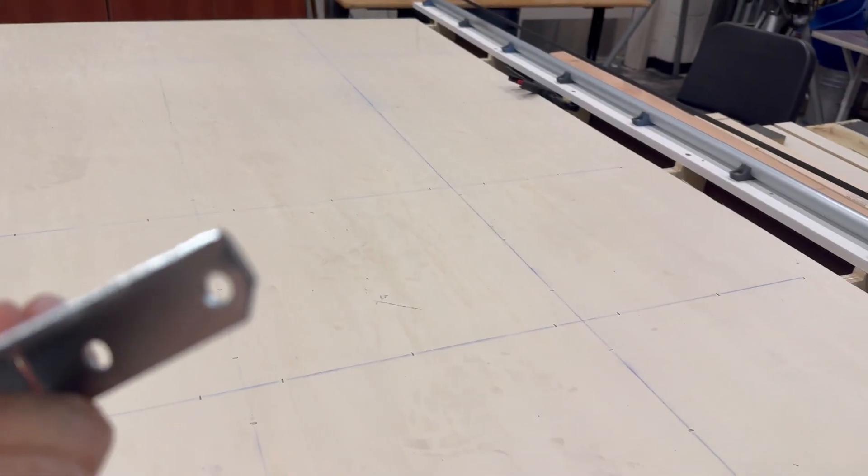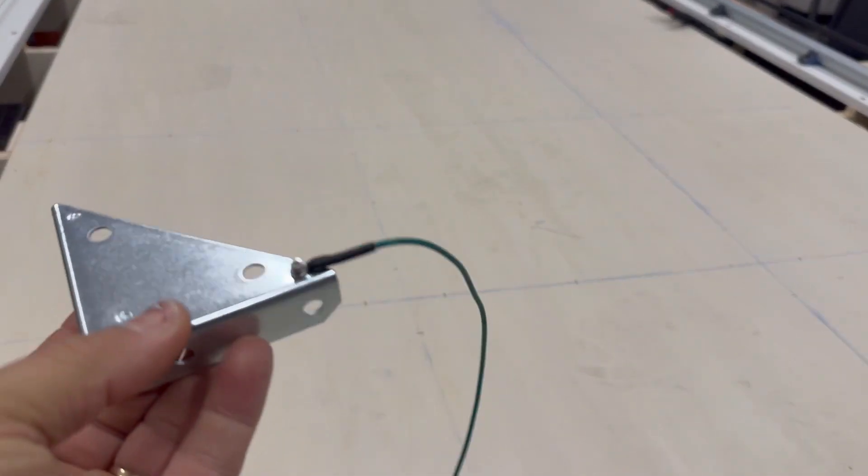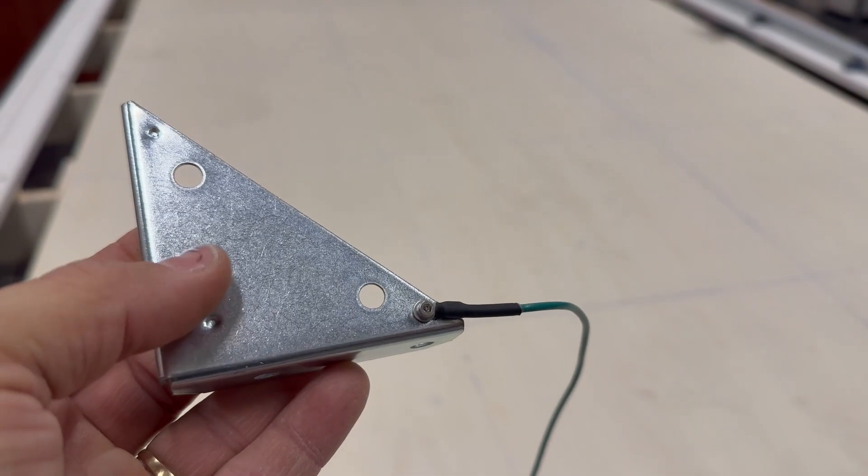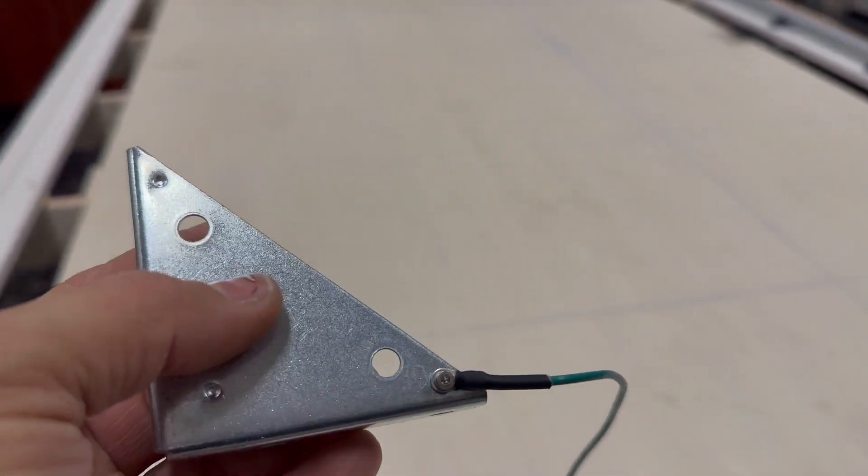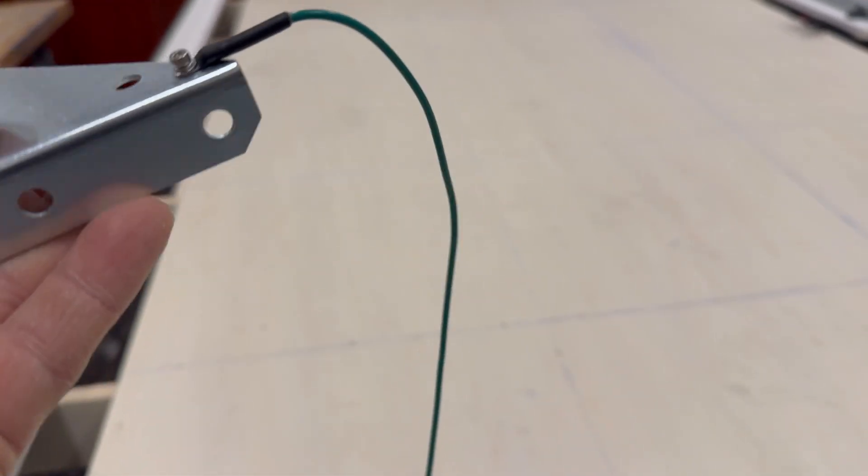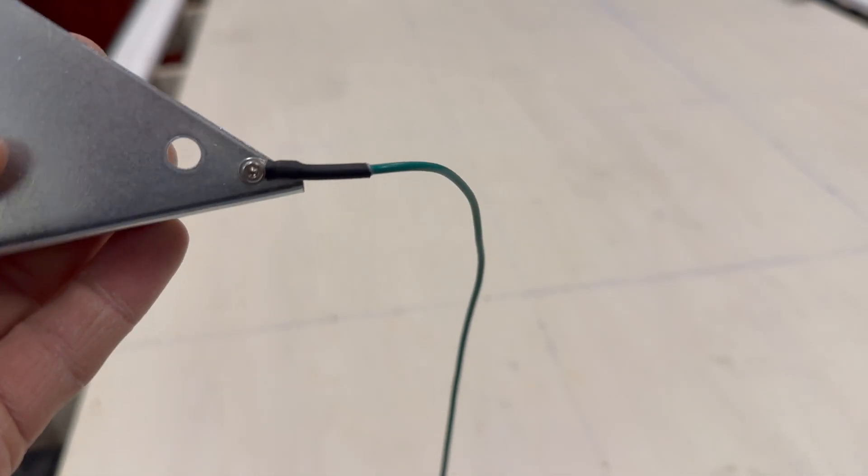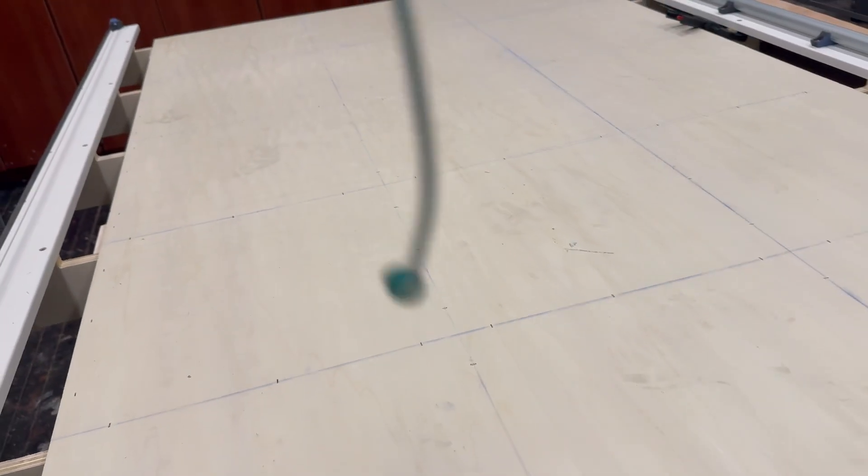So when you use your caliper, make sure you're getting a reading from where the dimple is because it'll give the thickest reading there. This one was 1.97 millimeters, so I just routed this puppy up to 2 mil, and I tapped in a 2.5 mil bolt with an eyelet to an alligator clip to make it easy.